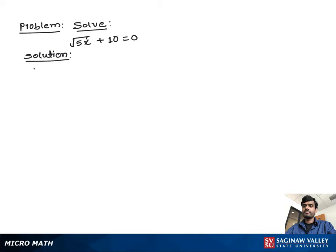Solve square root 5x plus 10 equals 0. Let's write the problem one more time: square root 5x plus 10 equals 0.